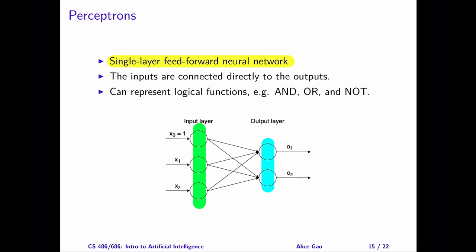However, the input layer does not have neurons. It simply contains the input values. The output layer has two neurons. Each neuron takes the input values, calculates the weighted sum, and feeds the result through some activation function to produce the output values.